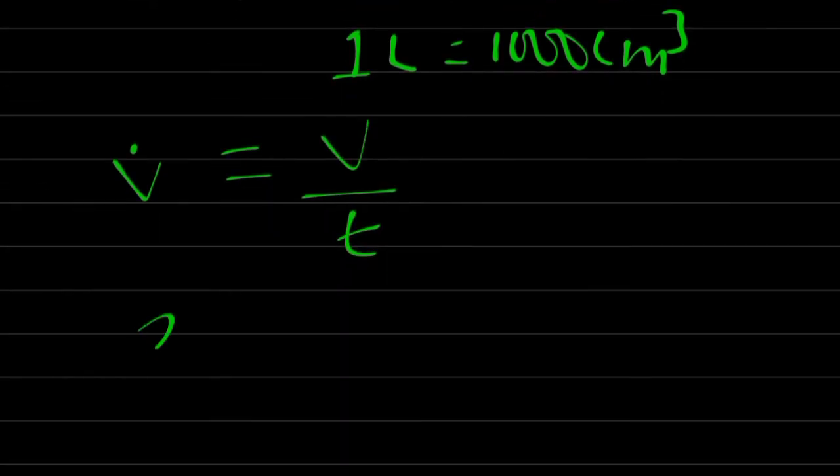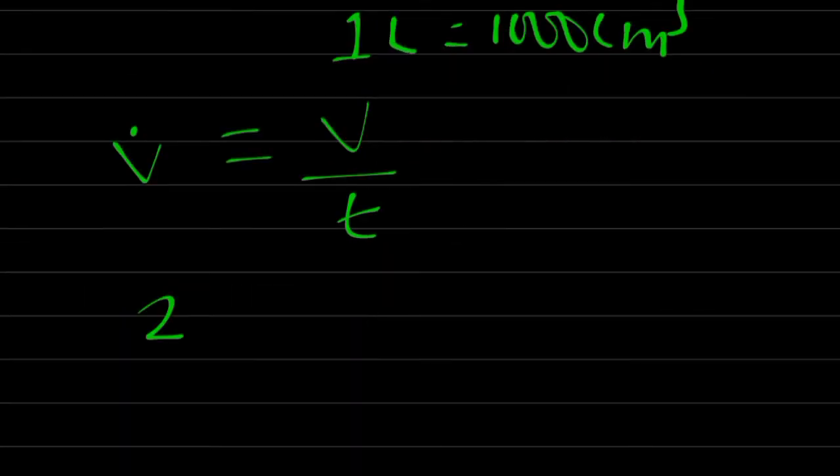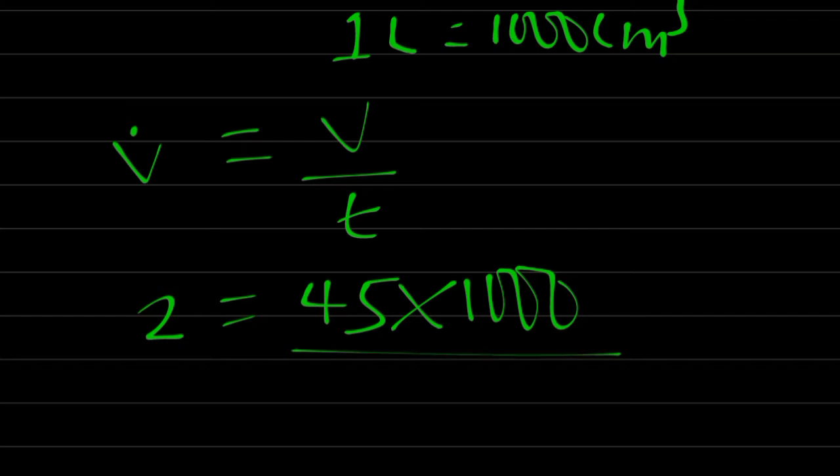And my volume flow rate is actually 2. Just like you are given speed to be 2, and you are asked to calculate the time taken to cover a distance of 45 times 1000 over time.